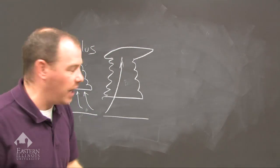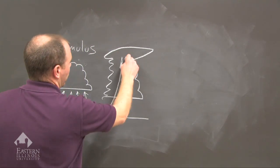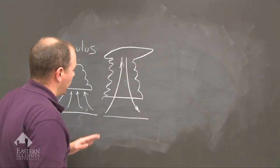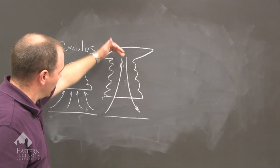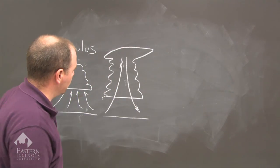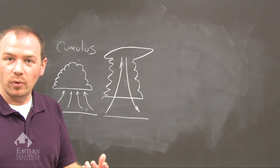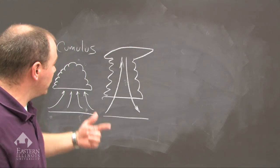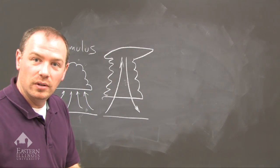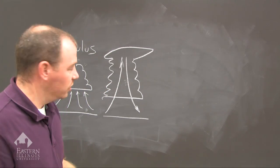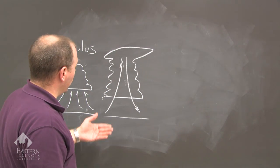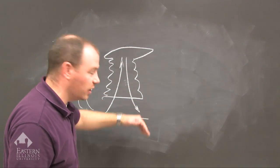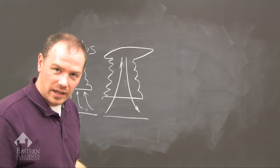What goes up must come down, therefore we have a downdraft. We have an updraft and a downdraft. The updraft is the warm, moist air feeding the cloud. The downdraft is cool air created by precipitation falling, which creates the downdraft.